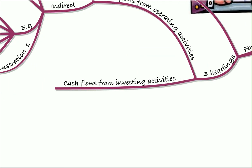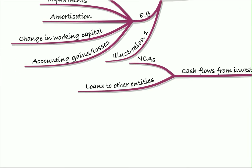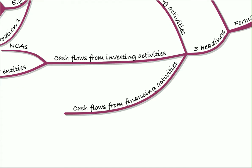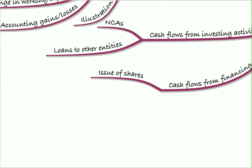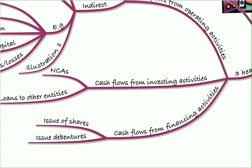We then have our second heading: cash flows from investing activities, for things like purchases and sales of non-current assets or loans to other entities. Lastly, our third heading is cash flows from financing activities, which includes the issue of shares, issue of debentures, and any financing activities the business has undergone.